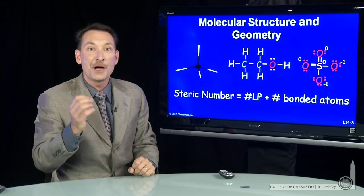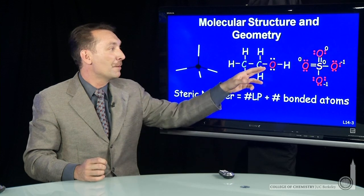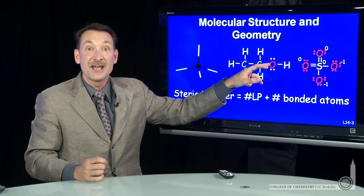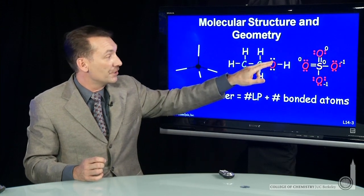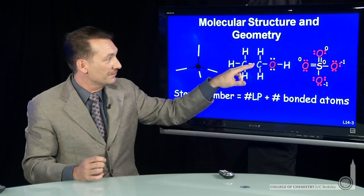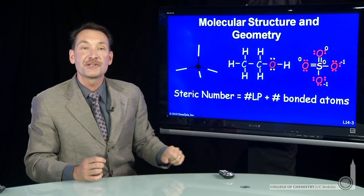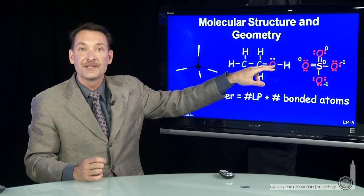So we'll define the steric number as the number of things that each atom has to accommodate. Lone pairs plus bonded atoms. We'll count up lone pairs, one, two, and bonded atoms, one, two, to come up with a steric number of four for this oxygen.